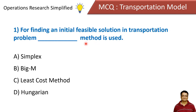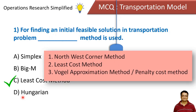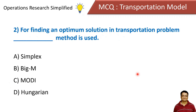Which method is used for finding an initial feasible solution in a transportation problem? Options: simplex method, game theory method, least cost method, or Hungarian method. The correct answer is least cost method. To get the initial feasible solution, we use either the northwest corner method, least cost method, or Vogel's approximation method (VAM), also called the penalty cost method.